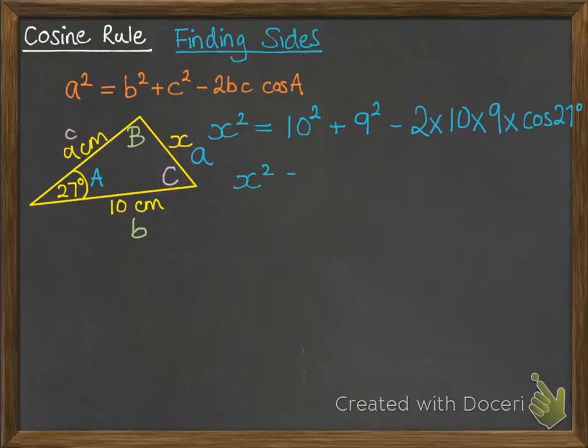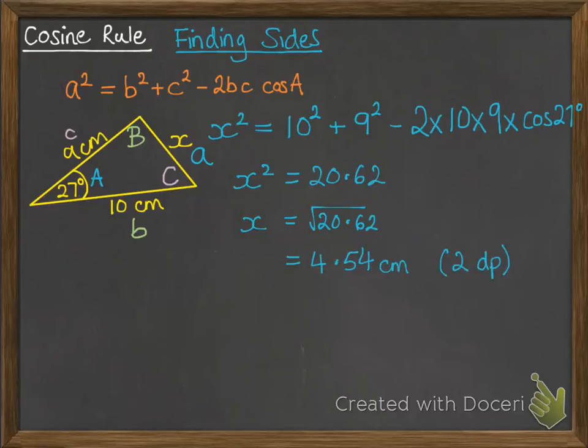If you pop that into your calculator you get x² equals 20.62. Of course keep that answer in your calculator when you then go on to do the next step. We want to square root it to find out what x is and that's 4.54. Whatever you do don't retype in the 20.62, make sure you're using that answer function on your calculator to recall the whole of your answer so you don't lose any accuracy.